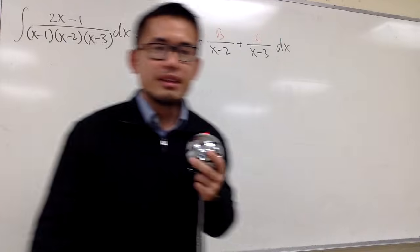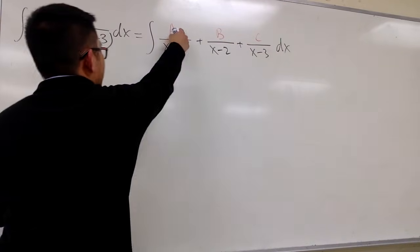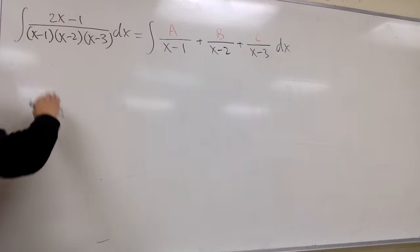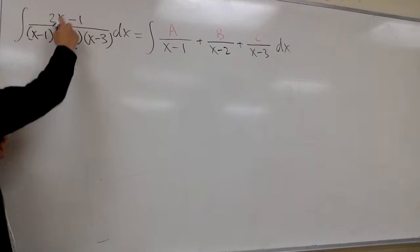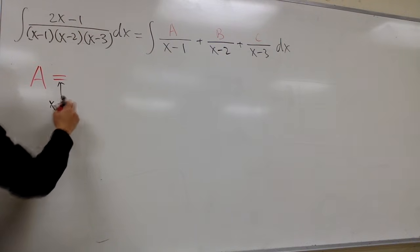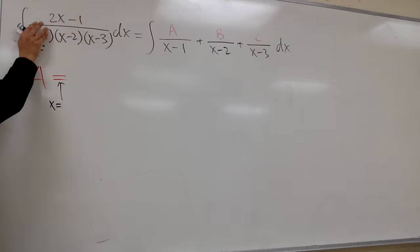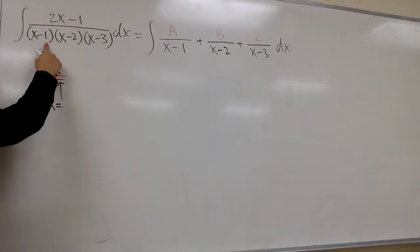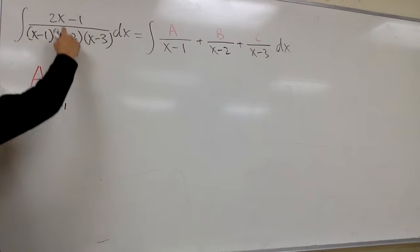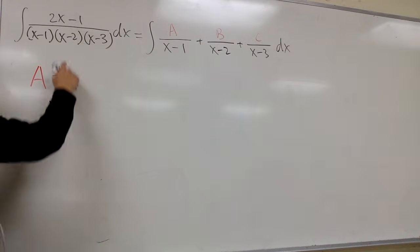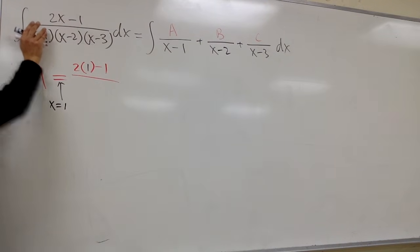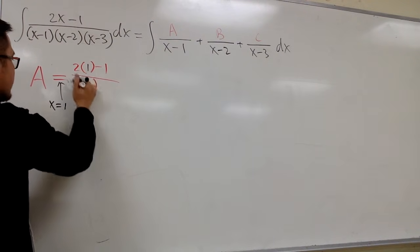I'm going to show you the cover-up method. To find A, notice the denominator for A is x minus 1. I go to the original expression and cover up that same denominator. I need to let x equal a number — to make x minus 1 equal to 0, pick x equal to 1. So I plug 1 into the rest of the expression. On top we have 2 times 1 minus 1, and on the bottom we have 1 minus 2 times 1 minus 3.